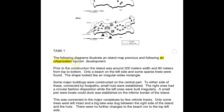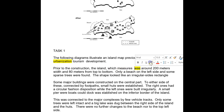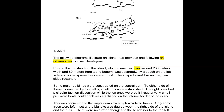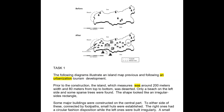Prior to construction — that's fine. The island was around 200 metres long. It still is — the island hasn't changed. So do it like this: 'the island, which measures,' present tense, 'around 200.' You can do it that way, it's good detail. Prior to construction it was deserted. Only a beach to the left and some sparse trees were found. Good. The shape hasn't changed either — the shape isn't going to change.